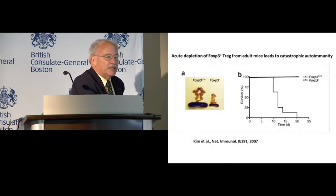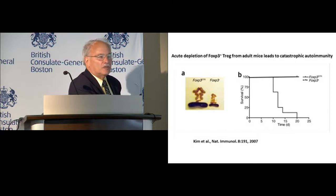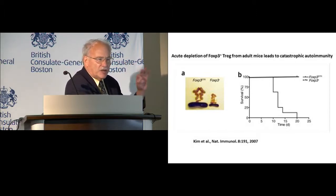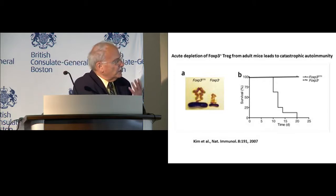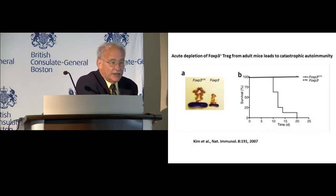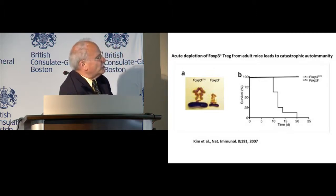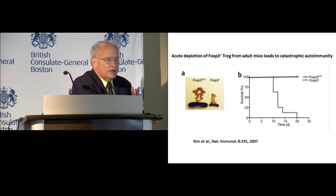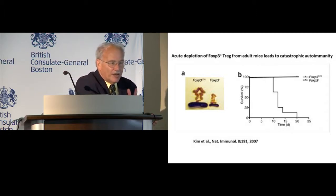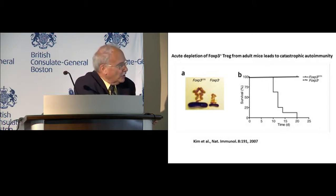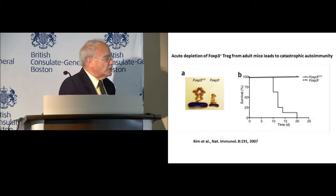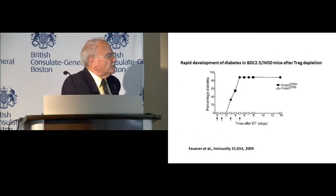Let me show you two experiments that should convince you these cells are really important. If you take a normal adult mouse and express the diphtheria toxin receptor under the control of the FOXP3 promoter, so only regulatory T cells express the receptor, and you administer diphtheria toxin, in 10 days the mouse is dead. Every single mouse dies. It has a gigantic spleen and gigantic lymph node cells. If you don't have these cells, you lose control of all auto-reactivity and die of flagrant autoimmune disease.